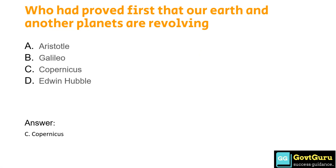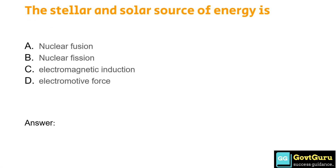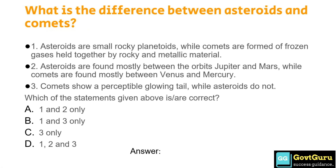The stellar and solar source of energy is: Option A: nuclear fusion, Option B: nuclear fission, Option C: electromagnetic induction, Option D: electromotive force. The answer is Option A, nuclear fusion.